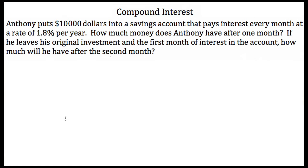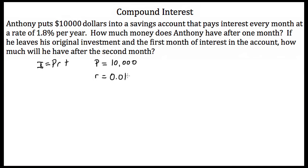Now let's look at another example. Anthony puts $10,000 into a savings account that pays interest every month at a rate of 1.8% per year. How much money does Anthony have after one month? We'll use our simple interest formula, I is equal to PRT. Our principal is $10,000. Our interest rate is 1.8% per year or 0.018 per year. Since we get paid interest every month, we need our monthly interest rate, so we divide 0.018 by 12, giving us 0.0015.